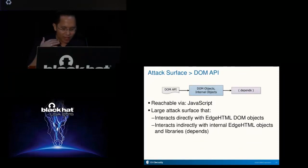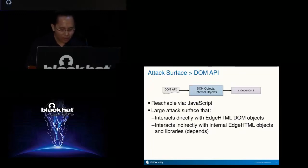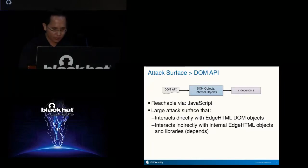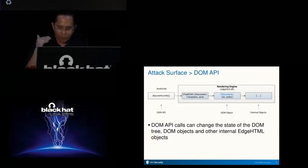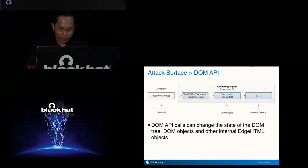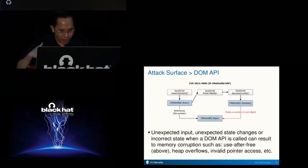Lastly, one of the largest attack surfaces in the rendering engine is the DOM API. Via the DOM API, JavaScript can interact directly with the DOM objects in the rendering engine. These DOM objects may in turn execute code in other internal rendering engine objects and may invoke code in the libraries they use. DOM API calls can change the state of the DOM tree, the DOM objects, and other internal rendering engine objects. Because of unexpected state changes, unexpected DOM API call input, or incorrect state when a DOM API is called, memory corruption vulnerabilities may result.